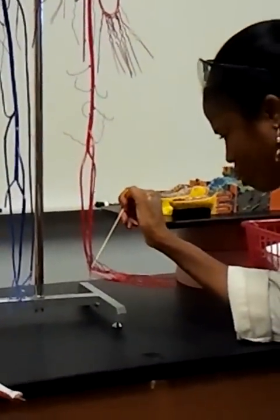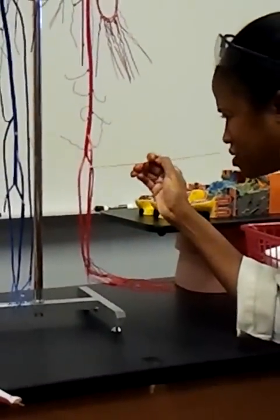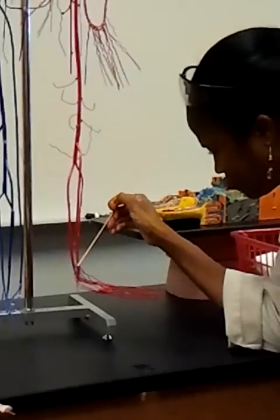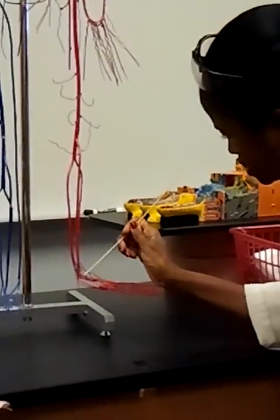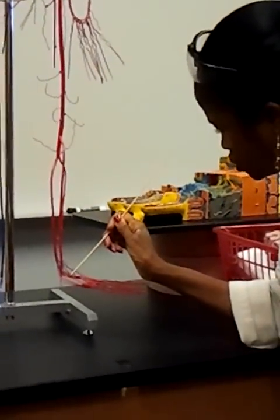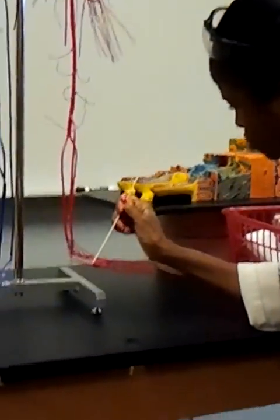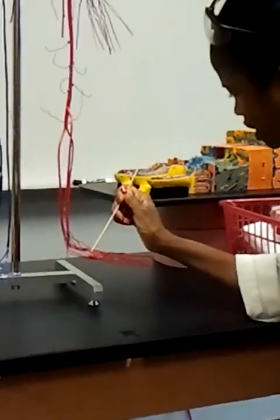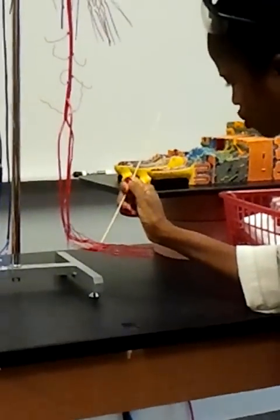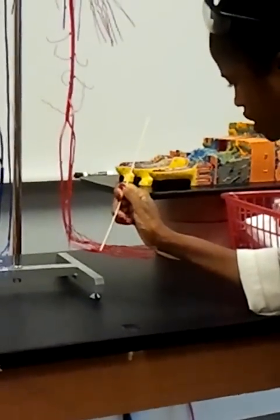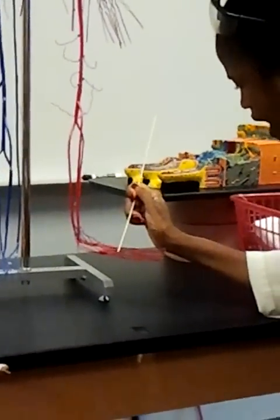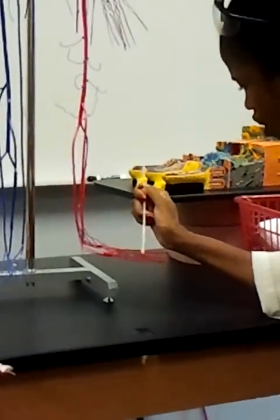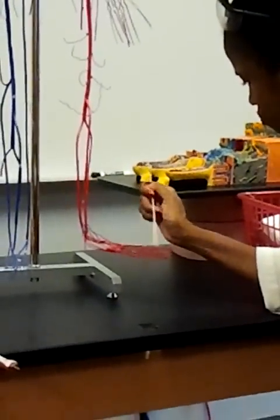I can see my lateral and medial plantar artery. Anterior tibial is coming on down. It becomes that dorsalis pedis right here. Then the dorsalis pedis makes up this arcuate artery. Then the arcuate artery gives off the dorsal metatarsal arteries, and then these coming out as your dorsal digital arteries as it branches again.